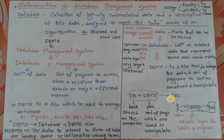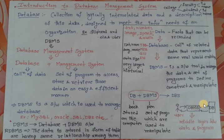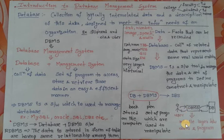Looking at the pictorial diagram: the user sends data to the DBMS, and DBMS sends that data to the database. After the database receives the data, the result is sent back to the DBMS, and DBMS sends the result to the user. So DBMS acts as a middle layer between the data and the program.